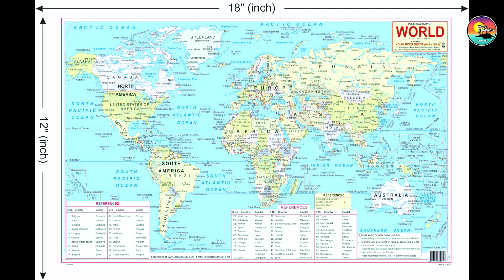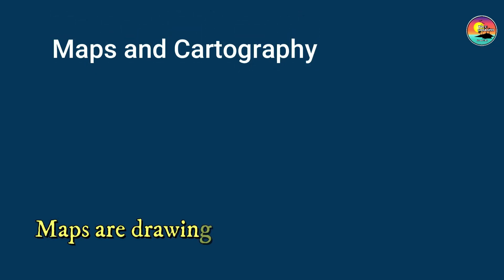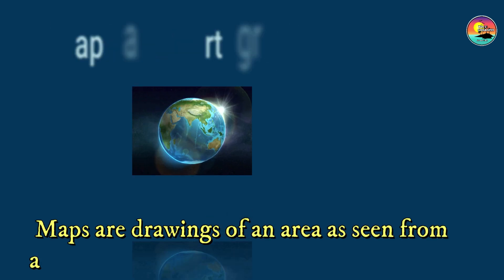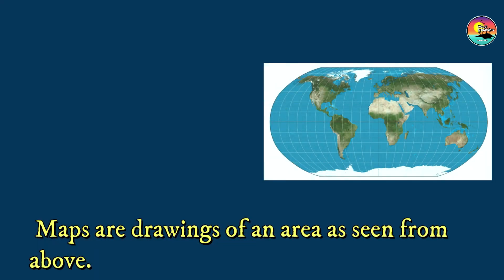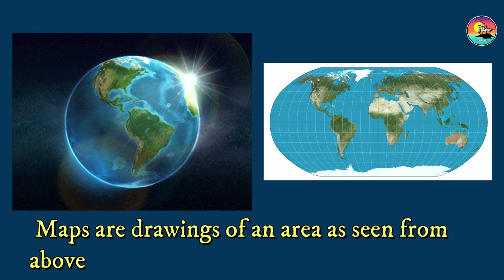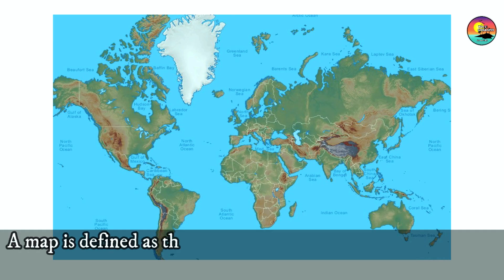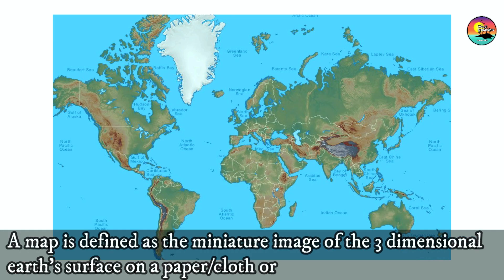Maps and Cartography: Maps are drawings of an area as seen from above. A map is defined as the miniature image of the three-dimensional earth's surface on a paper, cloth, or any flat surface.